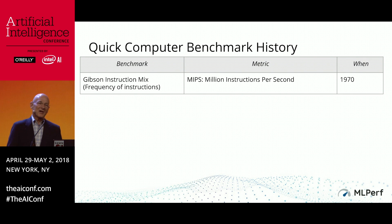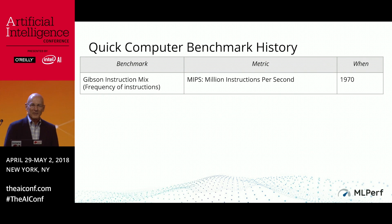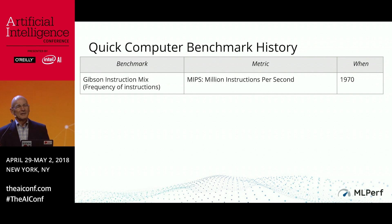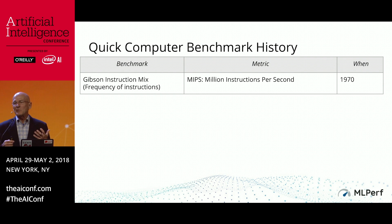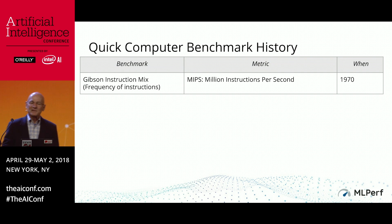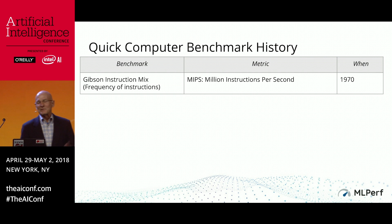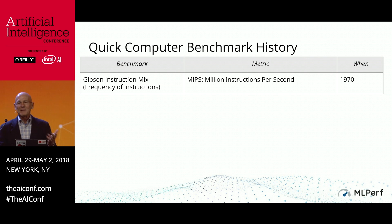My job is to set the stage, so let me go over 40 years of benchmarking in computer architecture. In the 1970s, the way we did that was we could guess how fast a computer was by just looking at the basic instructions and their average time, and we would calculate how many instructions per second — MIPS, millions of instructions per second.